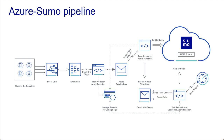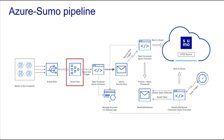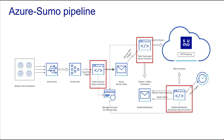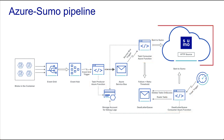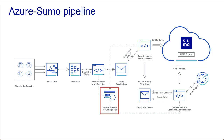The Azure-to-Sumo pipeline contains an Azure Event Grid that allows for uniform event consumption, and Azure Event Hubs — data streaming platforms that process millions of events per second. It also includes Sumo-provided Azure functions, small pieces of code that are triggered by an event hub to send monitoring data to a Sumo HTTP source. The Sumo HTTP source on a hosted collector receives the monitoring data from the Task Consumer Azure function. Azure Blob Storage is Microsoft's object storage solution for the cloud, optimized for storing large amounts of unstructured data.